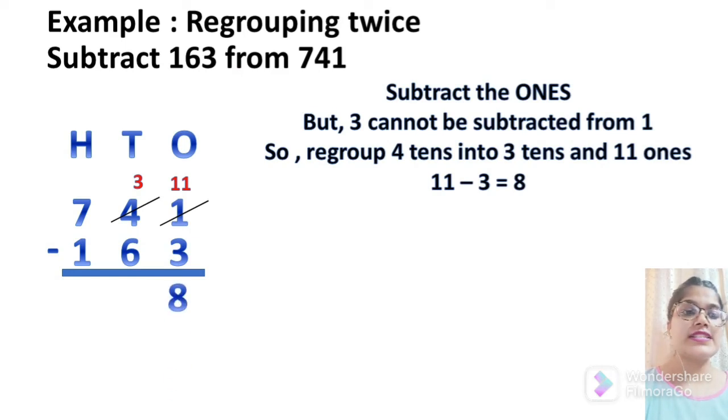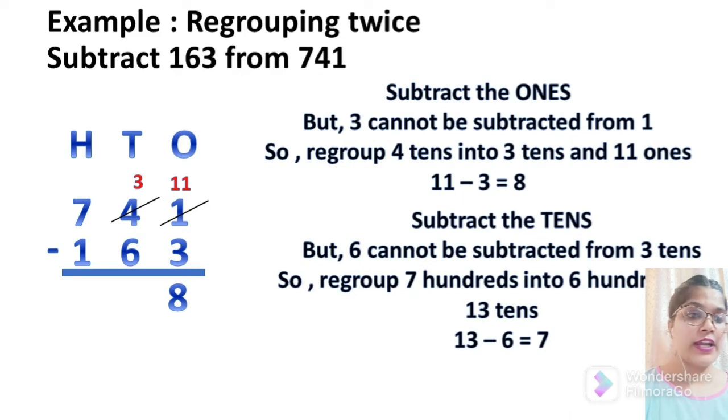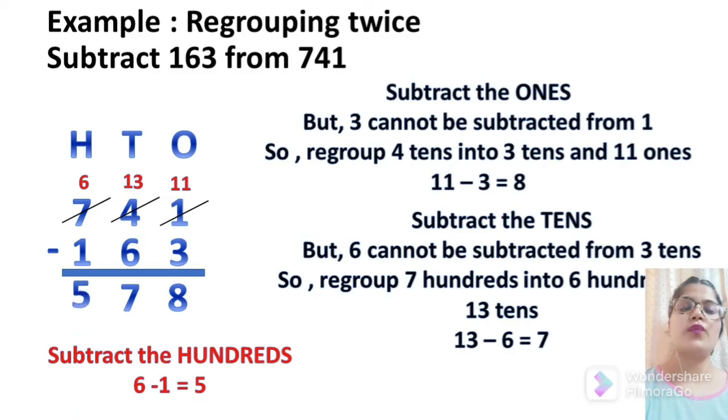Now, at tens, you can easily see that 3 is smaller than 6. Again, we have to take borrow. For that, we will regroup 7 hundreds into 6 hundreds and 13 tens. For that, we will put 1 before 3 and write it 13 and then we will put cross on 7 and write it as 6. We will do simple subtraction now. 13 minus 6 is 7 and 6 minus 1 under hundreds is equal to 5.